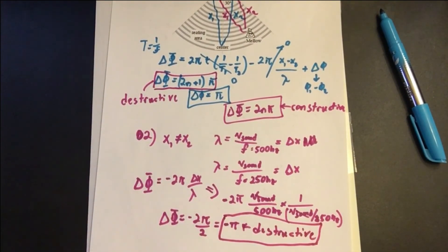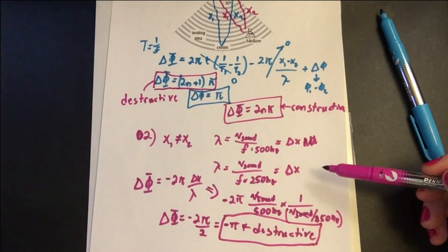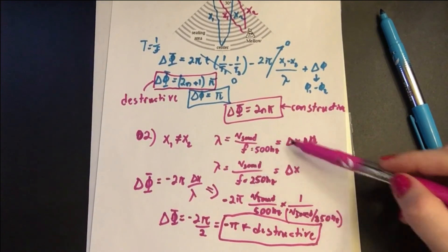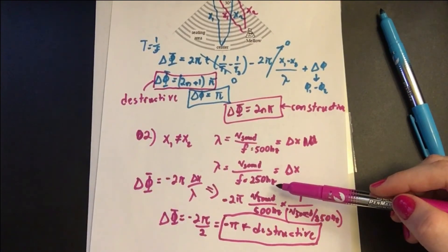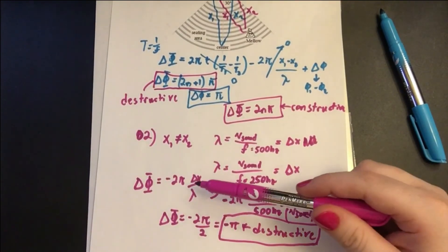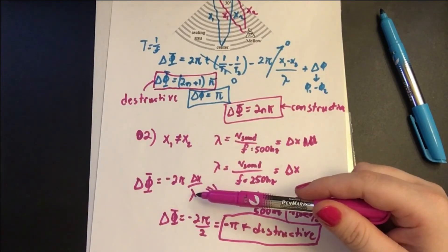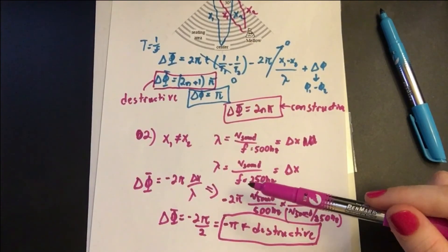So the answer was A. Mello was seated at a destructive interference point and heard little or no noise. So this was a bit of a more difficult problem because we had to use two equations to solve for Δx and for λ to plug into our destructive constructive interference equation.